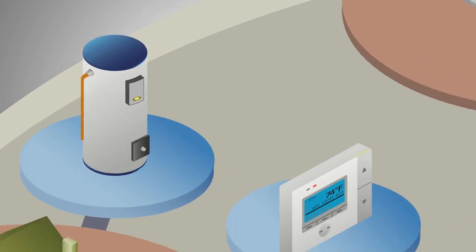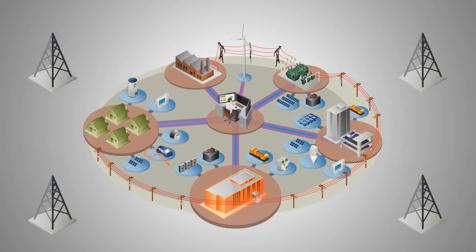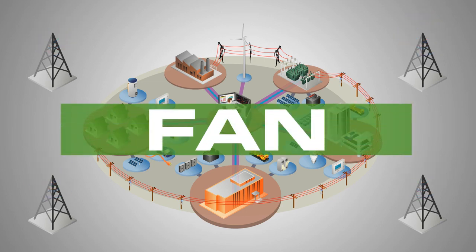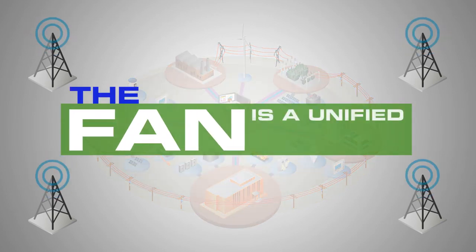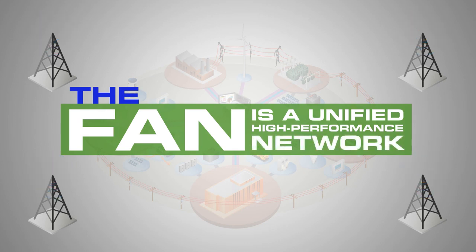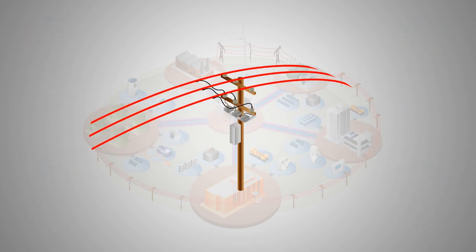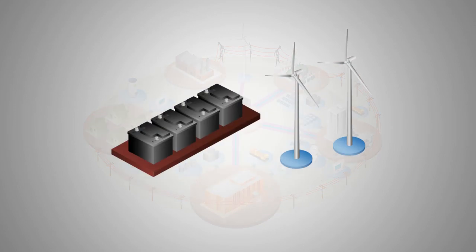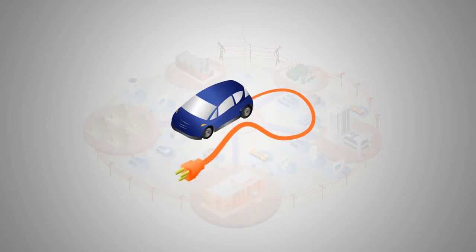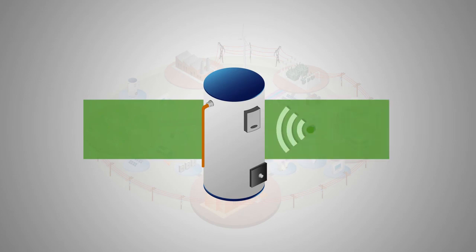The communications architecture that will enable this system of connected devices is called a Field Area Network or FAN. The FAN is a unified high-performance network supporting multiple utility applications such as distribution automation, photovoltaics, distributed energy resources, electric vehicles and demand response.